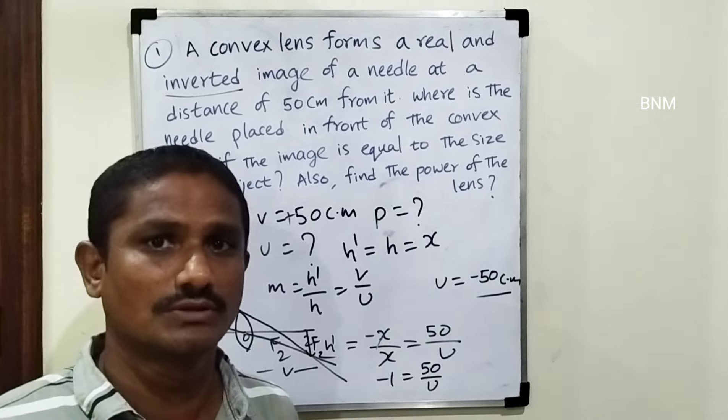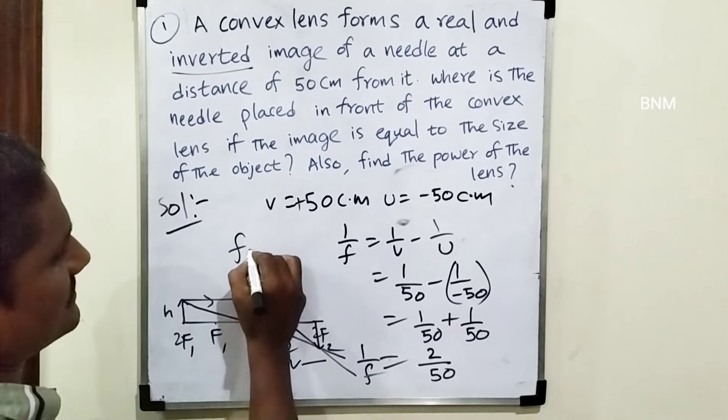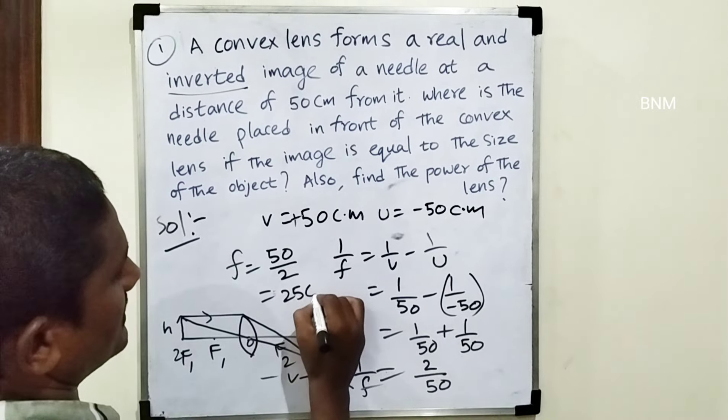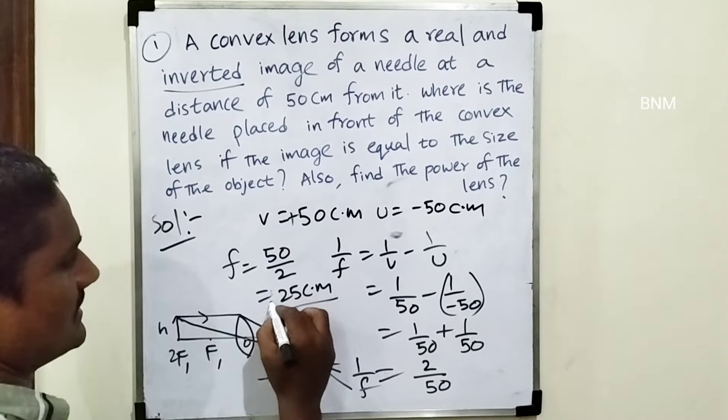F is equal — u is equal to minus 50, left side, minus 50 centimeters. Using the lens formula: 1 by F is equal to 1 by v minus 1 by u, which is 1 by 50 minus 1 by minus 50. That equals 1 by 50 plus 1 by 50, giving 2 by 50. So 1 by F equals 2 by 50, therefore F equals 25 centimeters. This is a convex lens, so F is positive: F equals 25 centimeters.